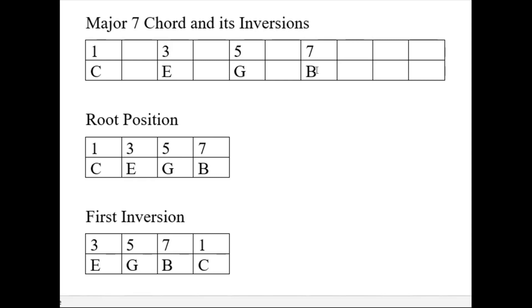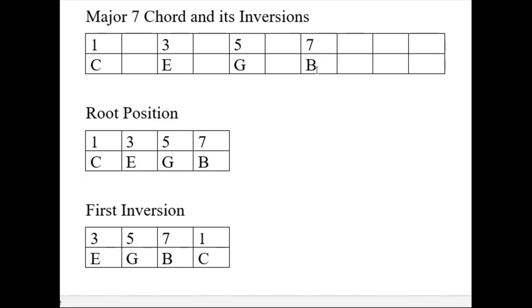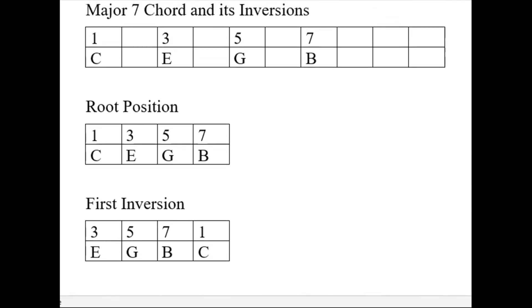Combining those notes, we create a C major seventh chord. Now, if we want to do a root position, we start with the root — the one, the C in the bass. So our root position is simply one, three, five, seven: C, E, G, B.